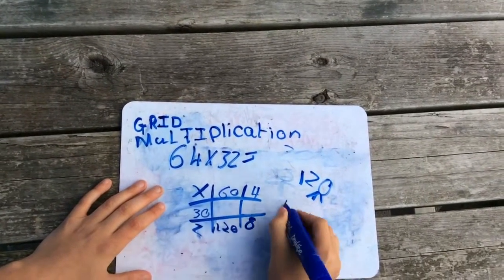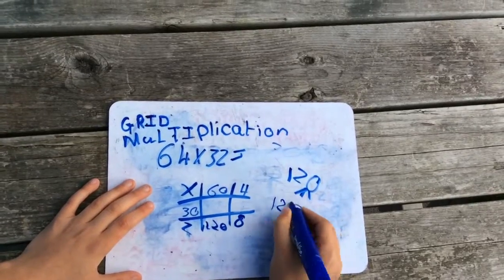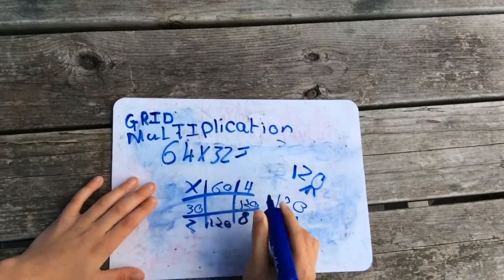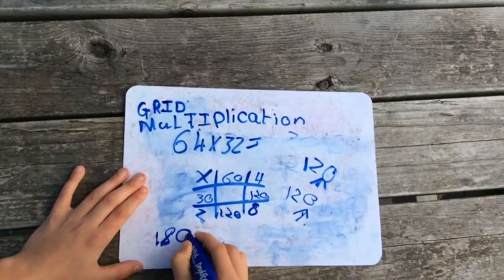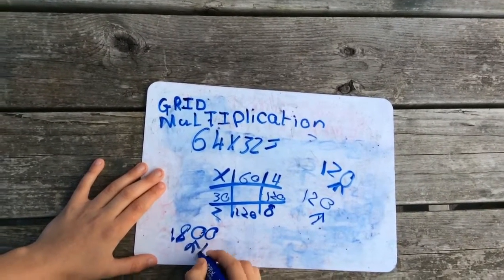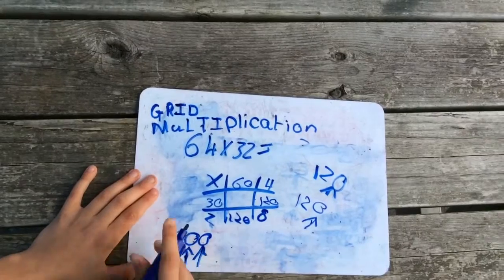4 times 3 is 12. 0 again. 120. 3 times 6 is 18. Add the two 0's. Right there. Right there. It's 1,800.